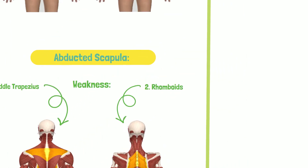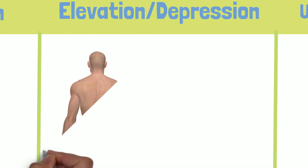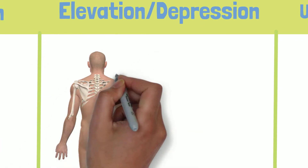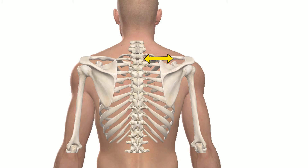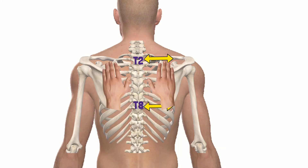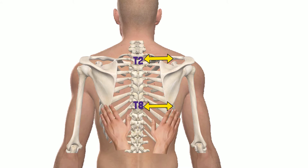Let's examine the second position: elevation and depression. The superior angle of the scapula rests around the second thoracic vertebral segment, and the inferior scapula angle is around the eighth thoracic vertebrae. To measure this, place your fingers on the superior angle to check if it's at the level of T2, then place your fingers on the inferior angle and note its position in relation to T8.